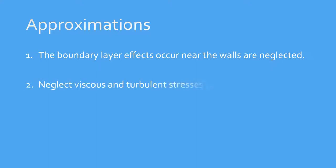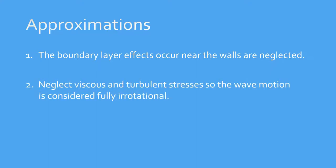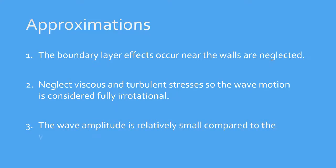Then we have the following approximations. Number one: the boundary layer effects that occur near the walls are neglected because the boundary layer is relatively thin compared to the water depth. Number two: neglect viscous and turbulent stresses so that the wave motion is considered fully irrotational. And finally, number three: the wave amplitude is relatively small compared to the wavelength.